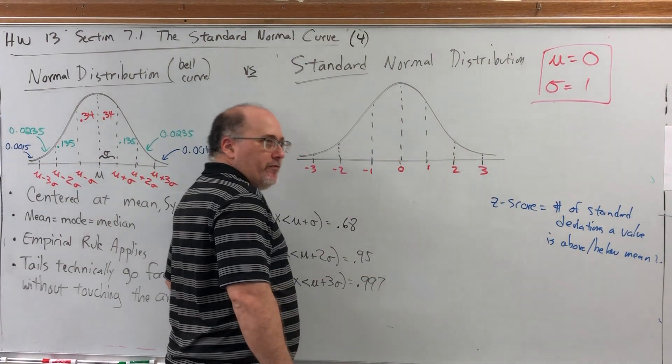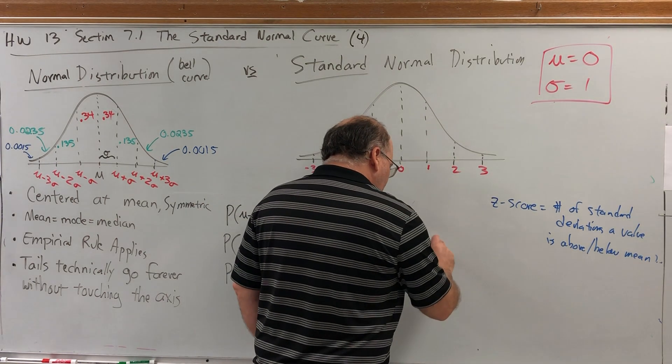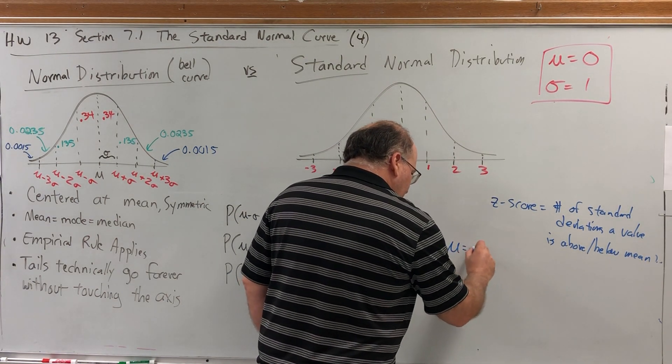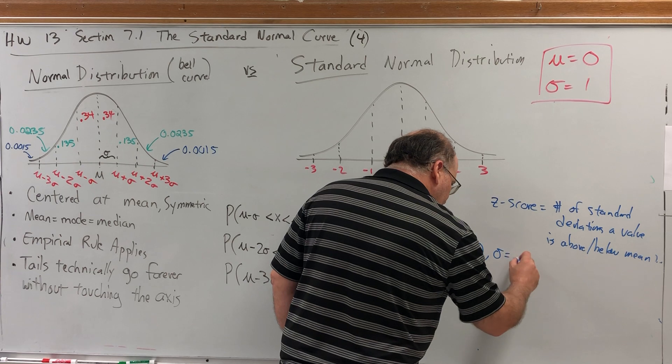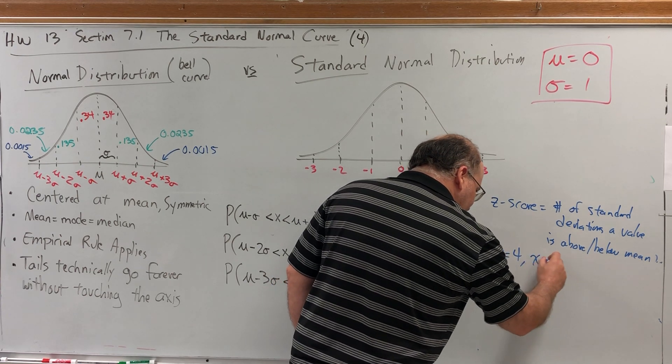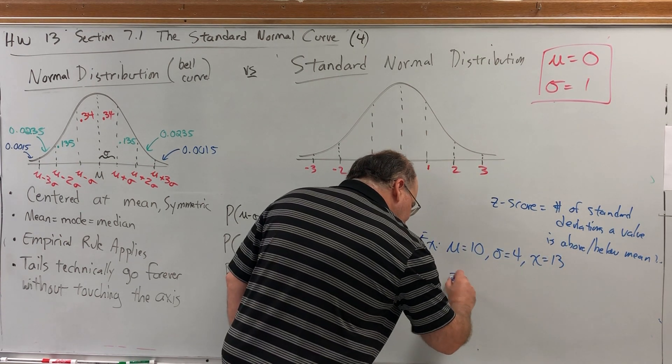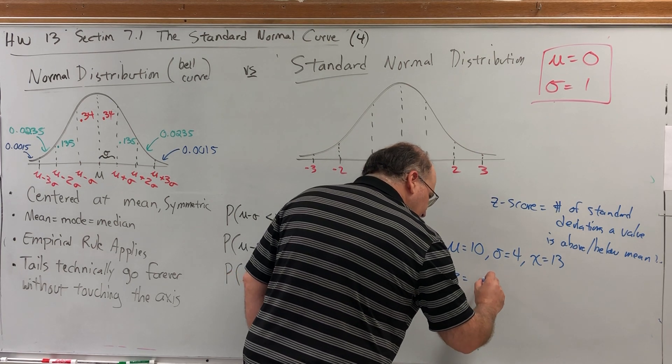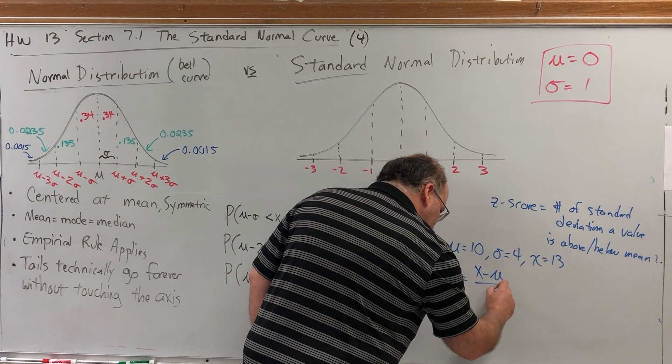So, if we step away from standard for a minute, for example, if mu equals 10, sigma equals 4, and x equals 13, then the z-score is x minus mu over sigma,